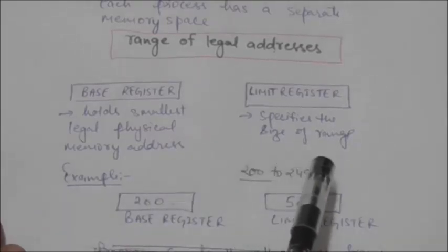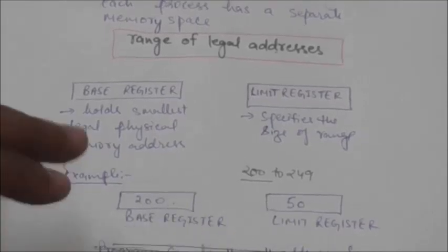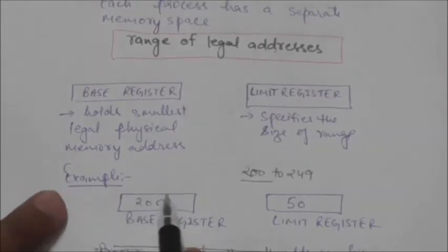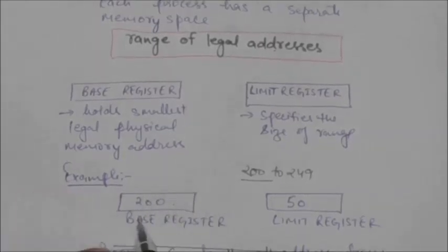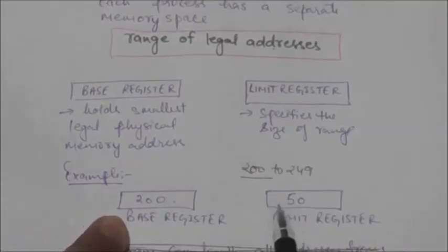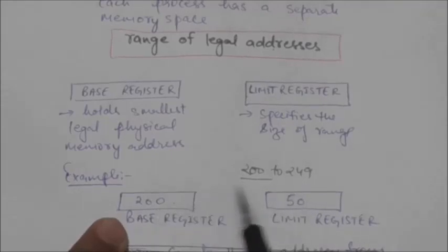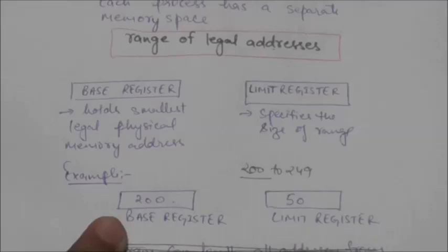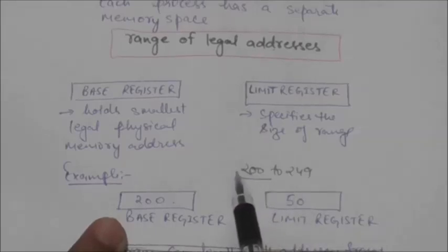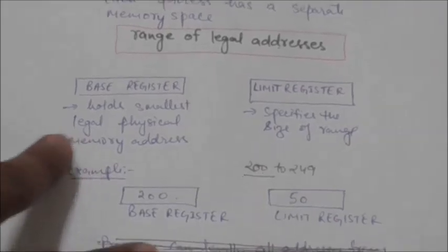The content of the base register is 200, so the smallest legal physical memory address the program can access is 200. The content of the limit register is 50, meaning the size of the range is 50. Therefore, the program can legally access 50 addresses, from 200 to 249.